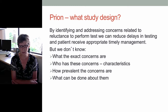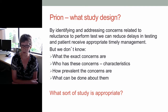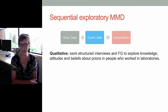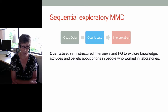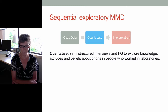We knew that if we could identify and address concerns related to the reluctance to perform tests, we could probably reduce delays in testing and patients would receive appropriate management more timely. But we didn't know what the concerns of laboratory workers were, who had the concerns, how prevalent they were, or what could be done about them. We decided to do a sequential exploratory mixed methods design — starting with qualitative data leading to quantitative data and then interpretation. We conducted semi-structured interviews with a variety of people from different types of labs and different levels of jobs. We enrolled 12 people, continuing until saturation — no new themes were emerging. Interviews were audio-taped, transcribed, and we used NVivo to organise the data.